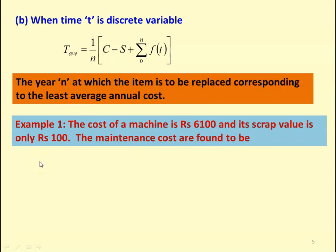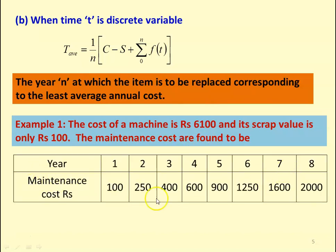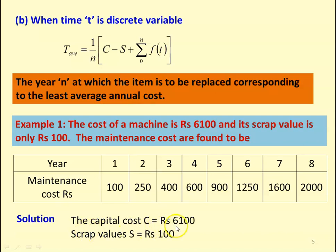We take Example 1 to understand the theory. The cost of a machine is ₹6100 and its scrap value is ₹100. The maintenance cost over the years is: Year 1 — ₹100, Year 2 — ₹250, Year 3 — ₹400, Year 4 — ₹600, Year 5 — ₹900, Year 6 — ₹1250, Year 7 — ₹1600, Year 8 — ₹2000. Find out when the machine is to be replaced. In the solution, capital cost C = ₹6100 and scrap value S = ₹100.